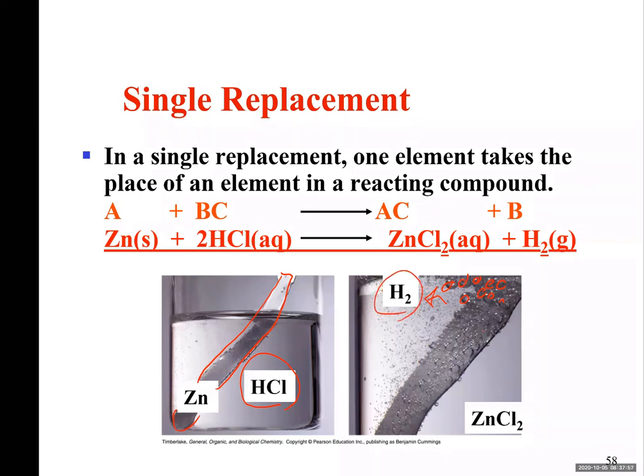Eventually, the zinc metal, zinc strip, is going to dissolve. And if you investigate, you'll see zinc is converted to zinc chloride. And you are going to observe this reaction.